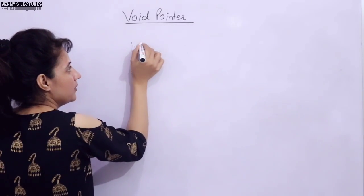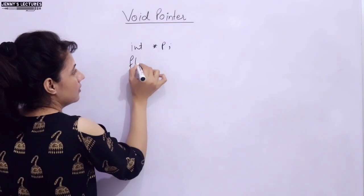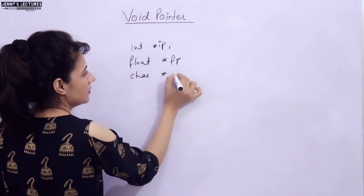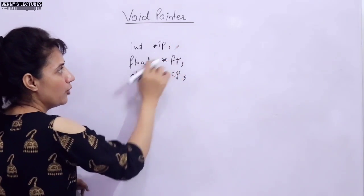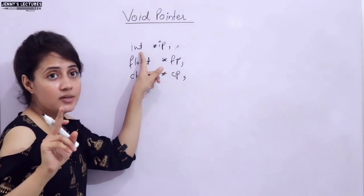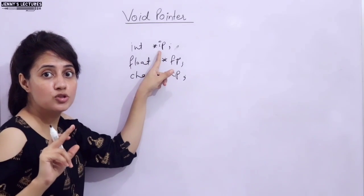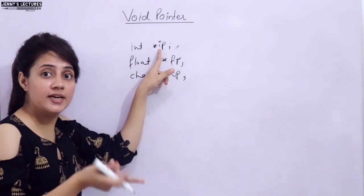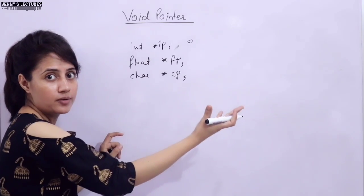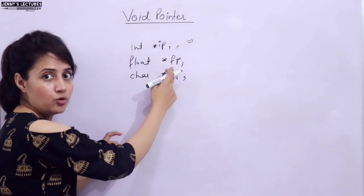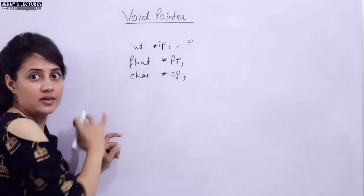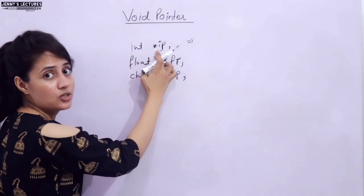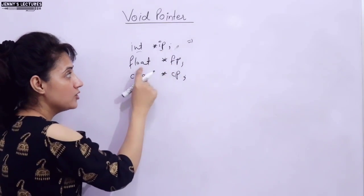See, if I write pointers like int *ip, float *fp, and char *cp — that means there are three pointers. This is integer pointer — ip is a pointer which is pointing to an int data type, or storing the address of a variable whose data type is integer. This is float pointer, this is pointer to character. They are all having their associated data types: int, float, and char respectively.